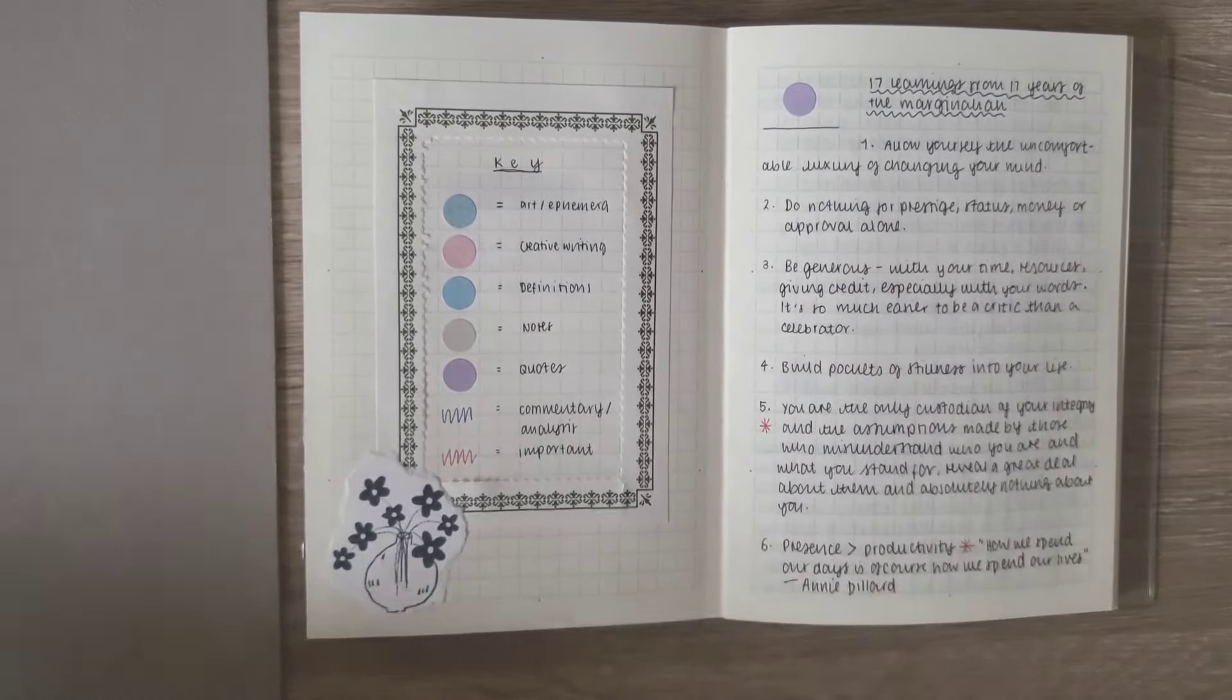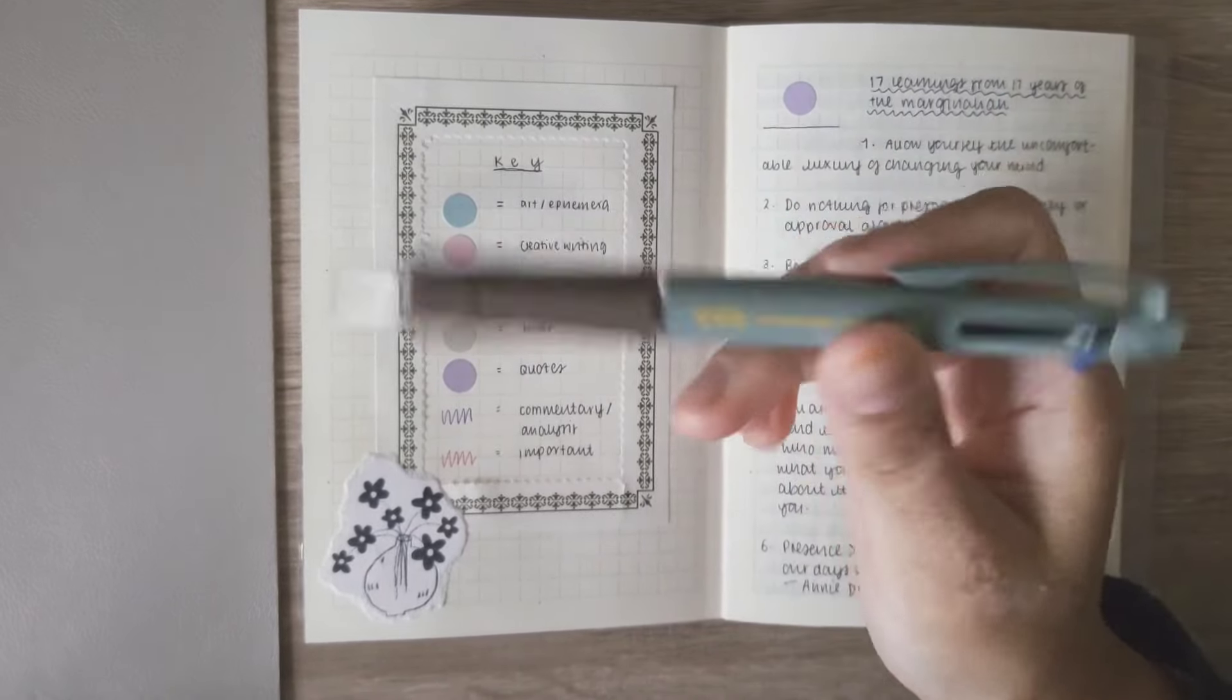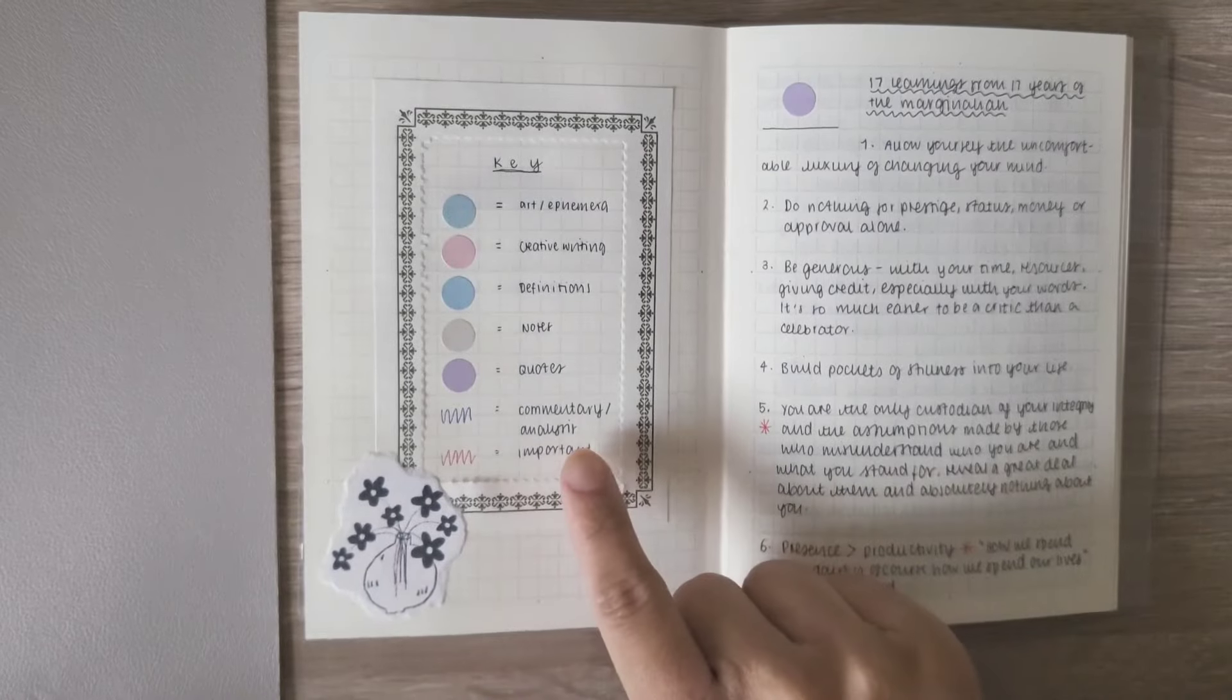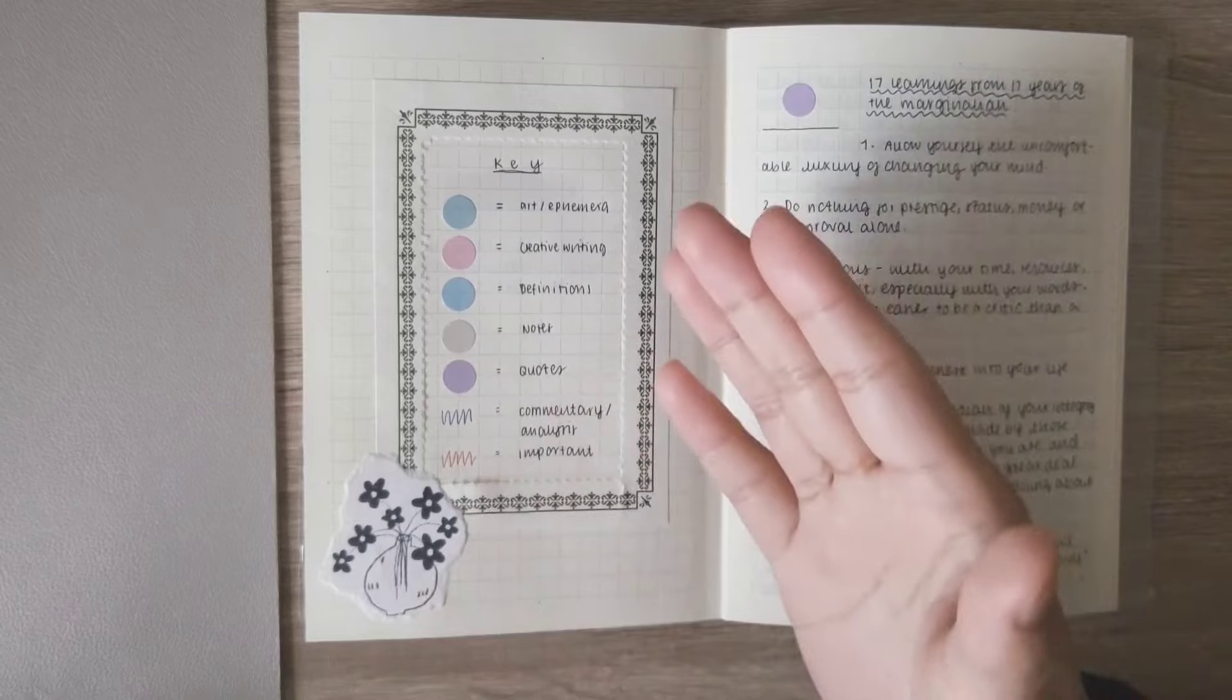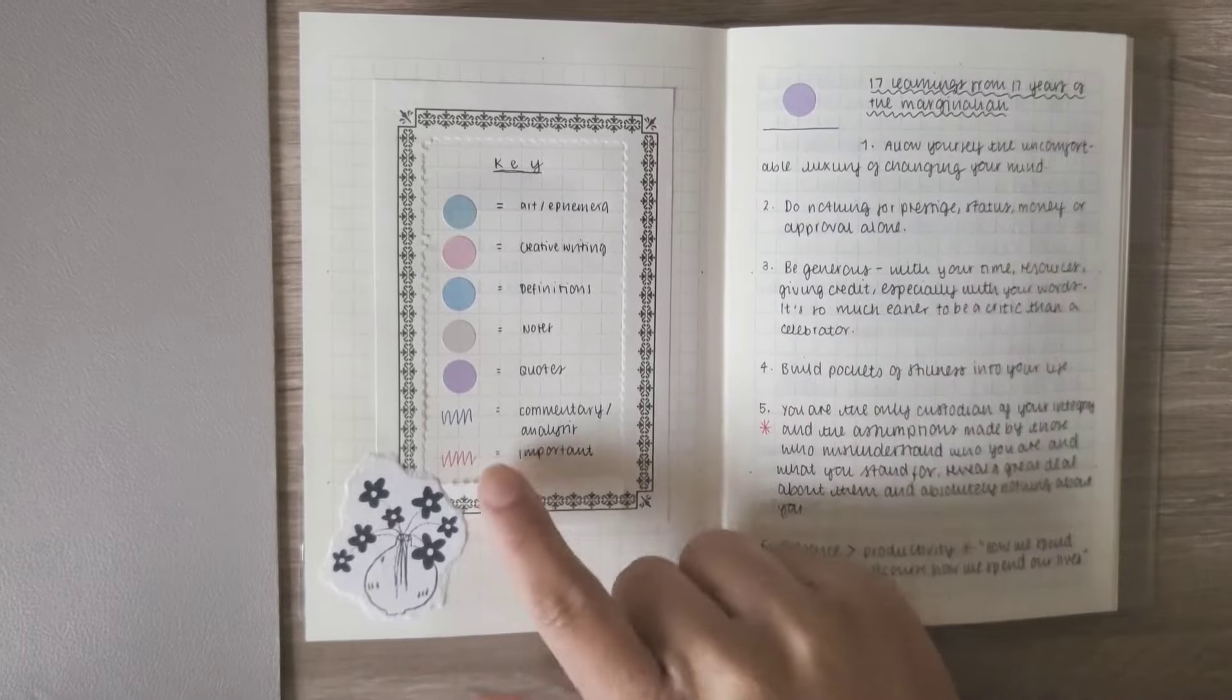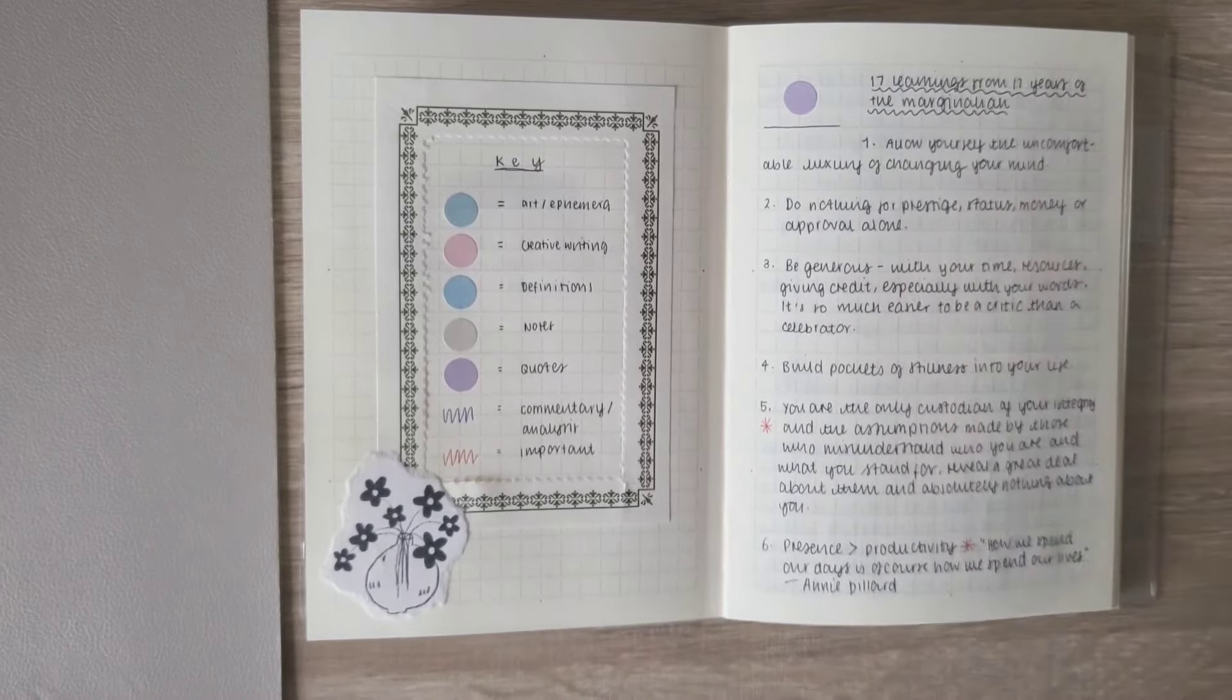And then because I use this Uniball multi-ink pen, this is the Hobonichi 2024 one, I actually use red and blue. So blue ink means it's my own commentary slash analysis to something else, if that makes sense. And then red, it just means it's important, kind of like a highlight. Like this really stood out to me or this is really important.